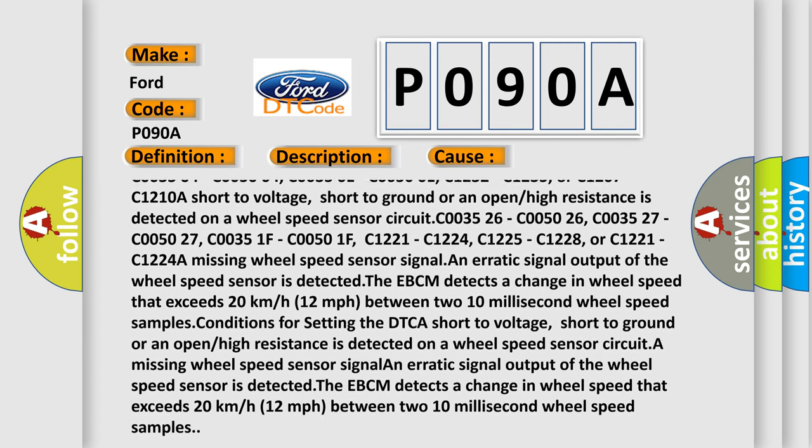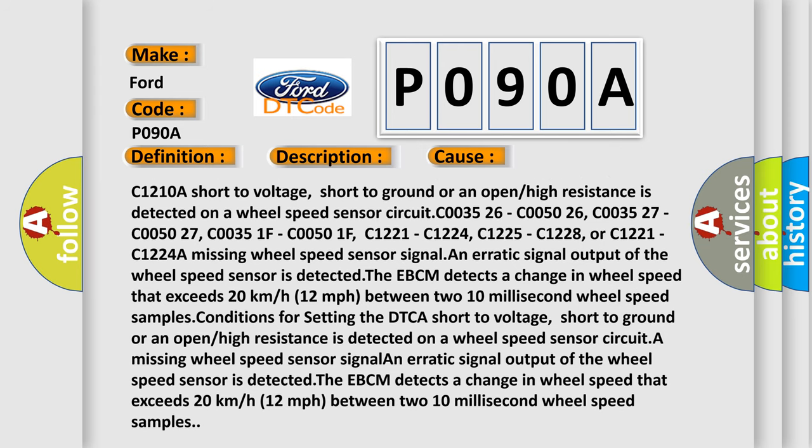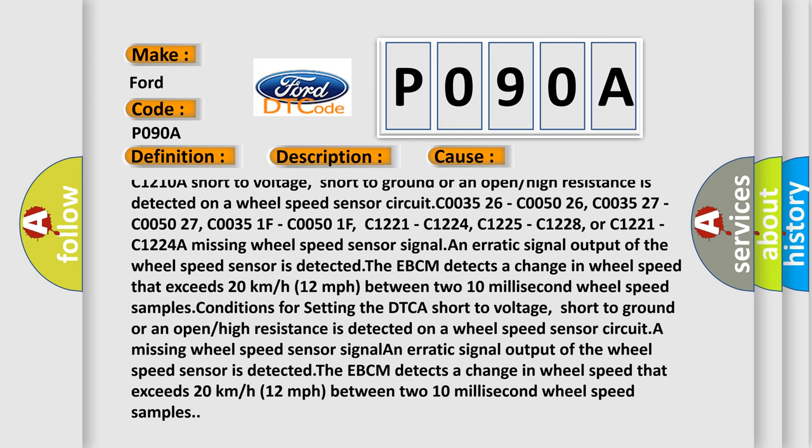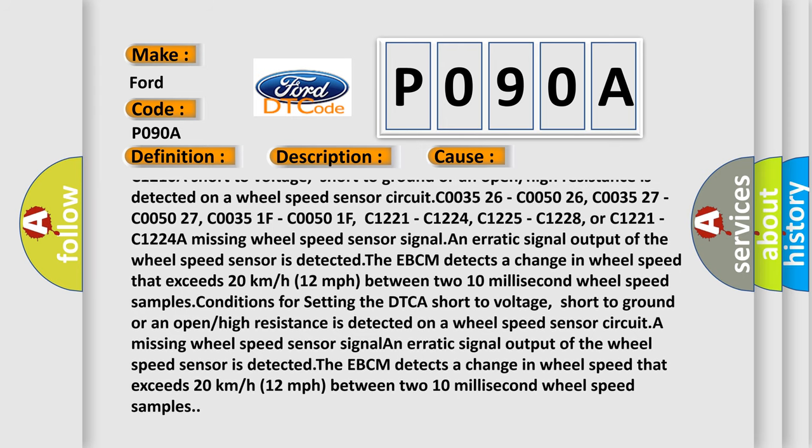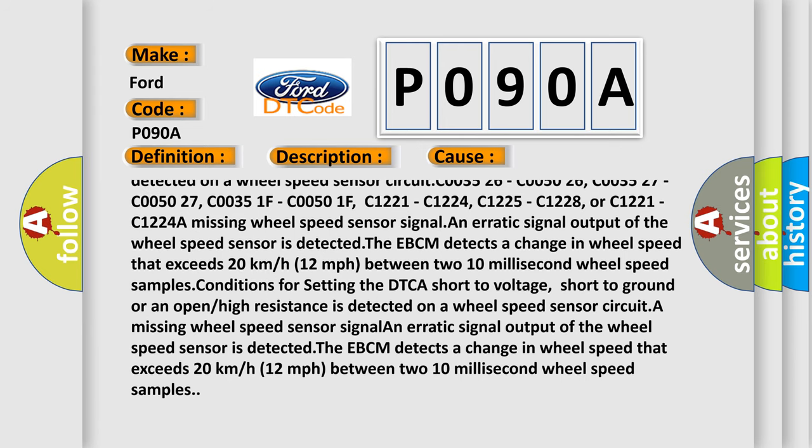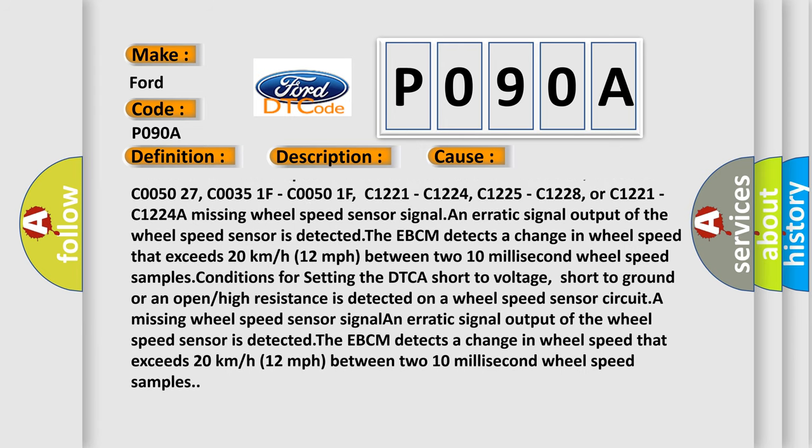Short to ground or an open or high resistance is detected on a wheel speed sensor circuit. It's C003526, C005026, C003527, C005027, C00351F, C00501F.